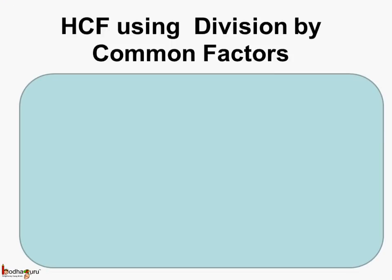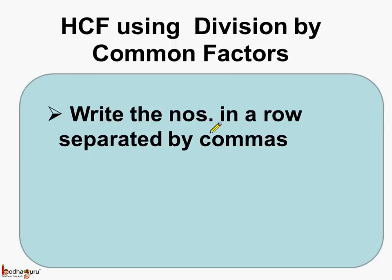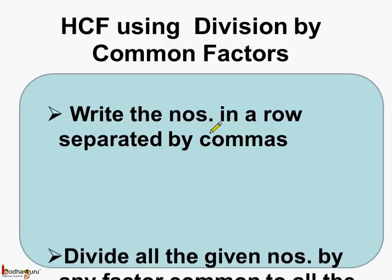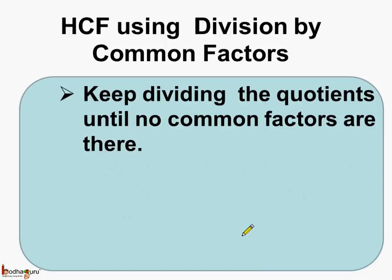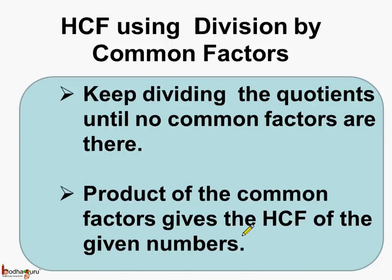Let us see again how we found the HCF using the division by common factors method. First, write the numbers in a row separated by commas. Next, divide all the given numbers by any factor which is common to all the numbers. Then keep dividing the quotients until no common factors are there. And lastly, the product of the common factors gives the HCF of the given numbers.